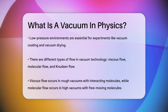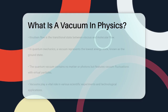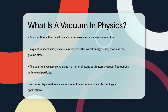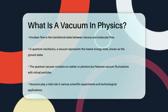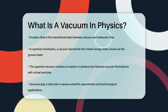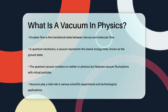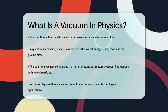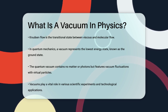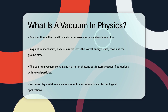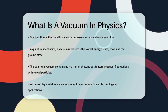In quantum mechanics, the concept of a vacuum is a bit different. Here, a vacuum is the state with the lowest possible energy, known as the ground state. This quantum vacuum, or QED vacuum, contains no matter particles and no photons, but it does have vacuum fluctuations where virtual particles appear and disappear.